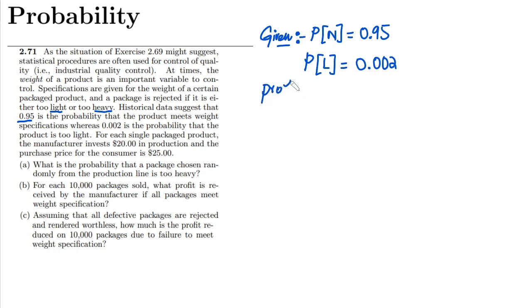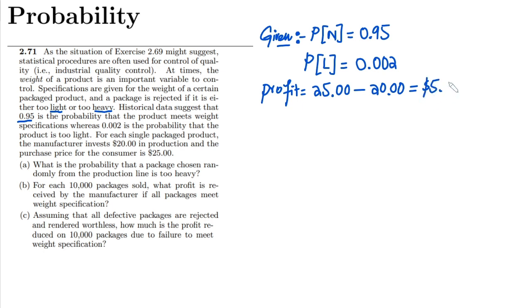On the basis of the cost and price, we can find out the profit for each product. That would be $25.00 minus $20.00, which equals $5.00. So on the basis of these two items we have found out the profit per item.